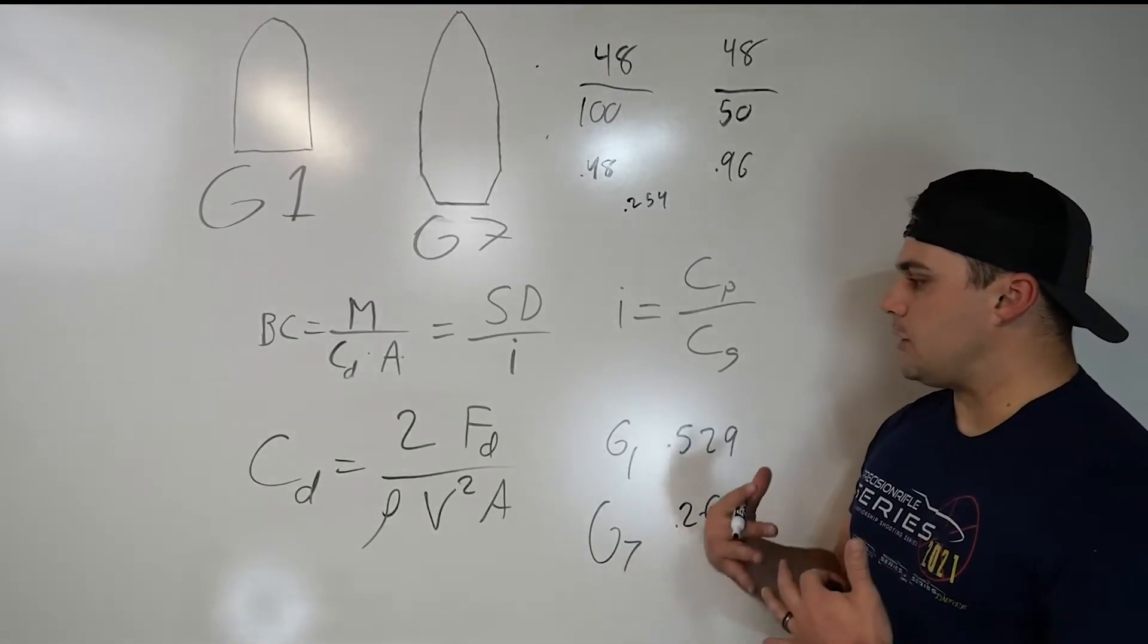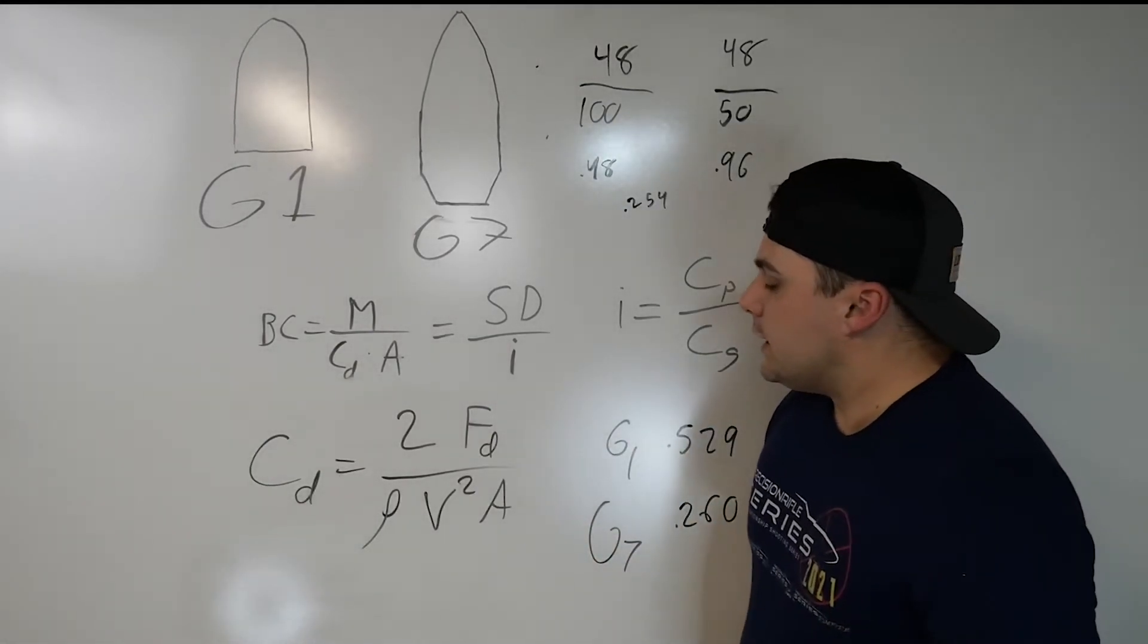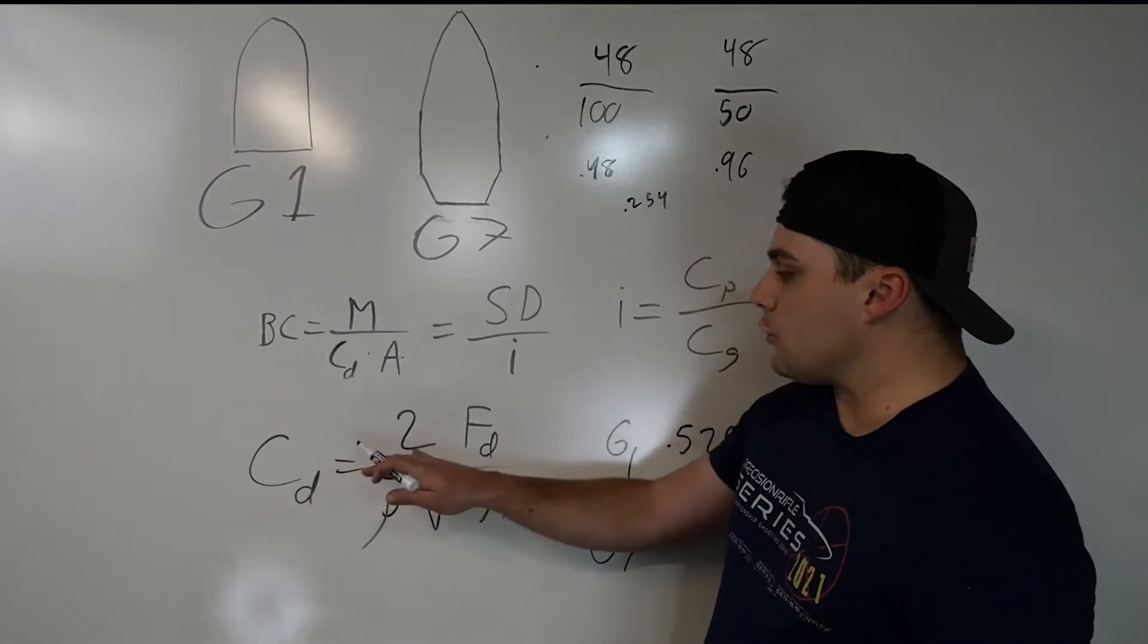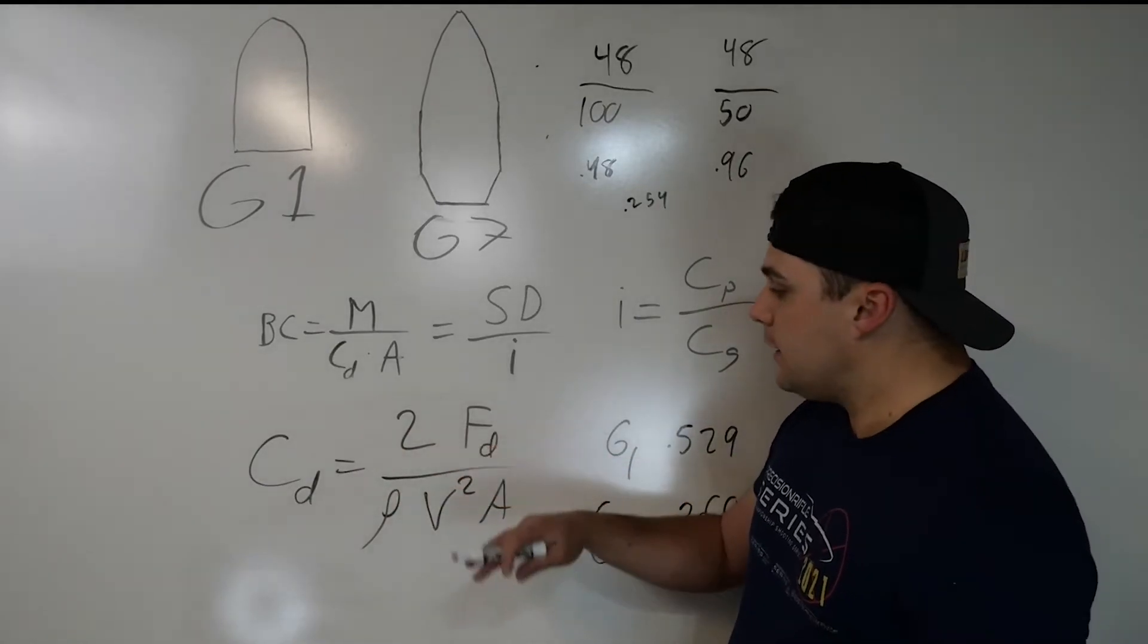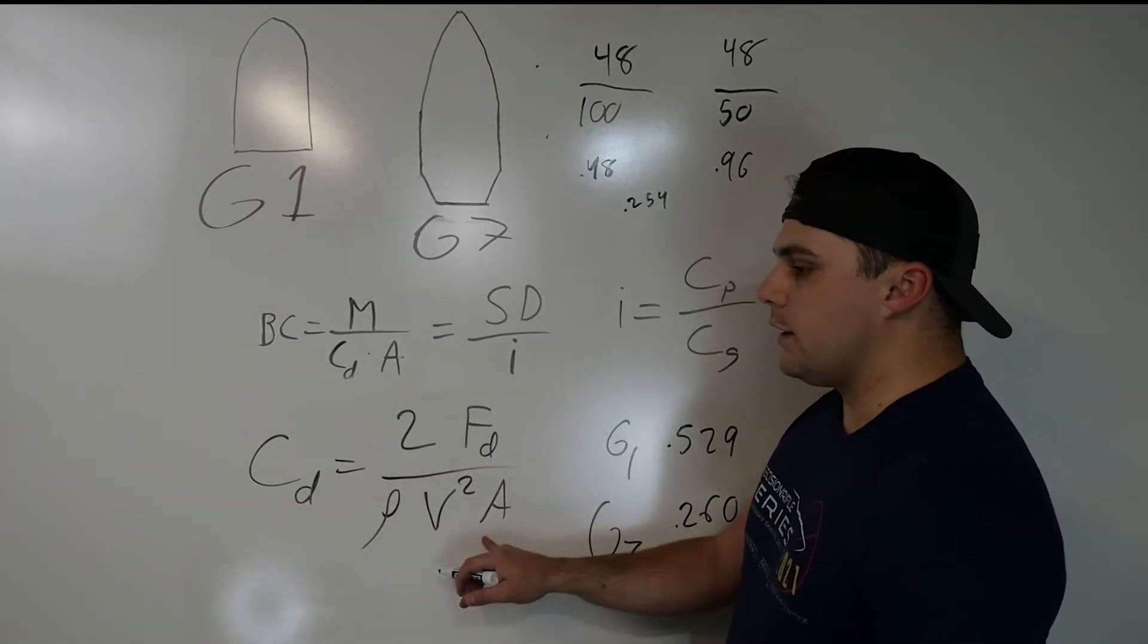So a little bit more about drag factor and how it ties into this, the drag coefficient equals 2 times the force of drag divided by the density of the fluid times the velocity of the projectile squared times the area.